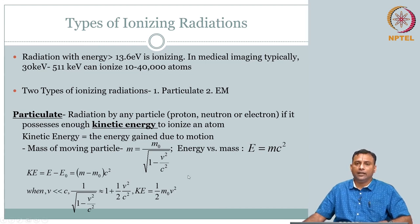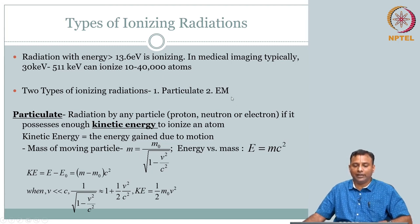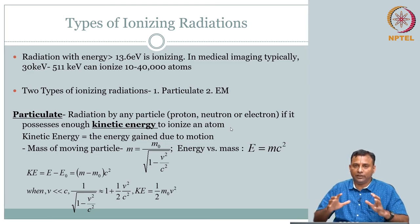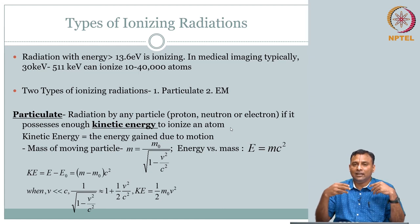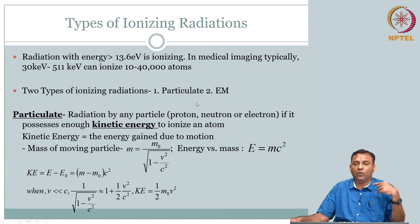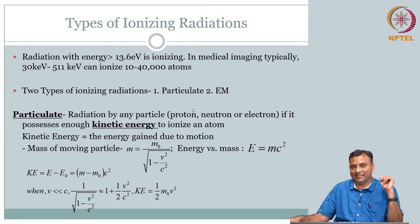We will stop here and continue forward in the next lecture. We have now covered the two types of radiations. We still need to understand the typical interactions of these radiations with material — both for particulate and electromagnetic radiation. When we cover that, we will understand the attenuation property of tissue to X-ray energy, which is the underlying signal in X-ray projection radiography and X-ray CT. Thank you.